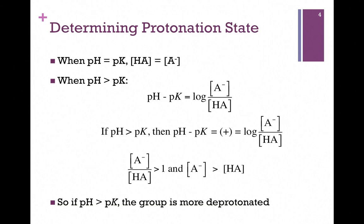You really only need to remember one of these two rules: if you just remember that when pH is less than pKa it's more protonated, the opposite must also be true. Now, as to whether or not that adds or neutralizes a charge, that depends on the group. For instance, if it's a carboxylic acid group and it's more protonated, then it has a neutral charge. However, if it's an amine group and it's more protonated, it has a positive charge. So just keep these general rules in mind.